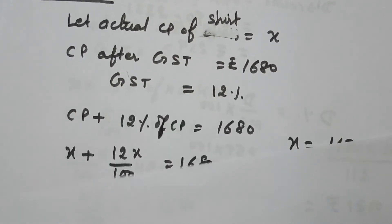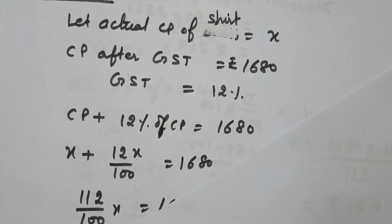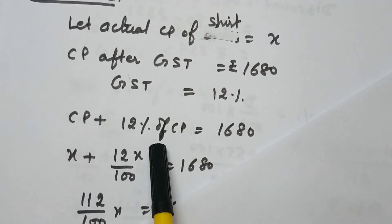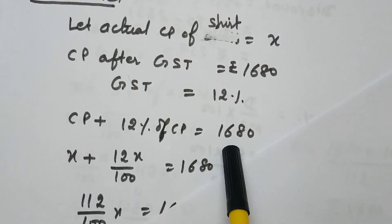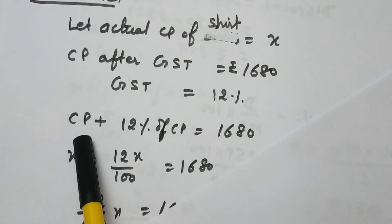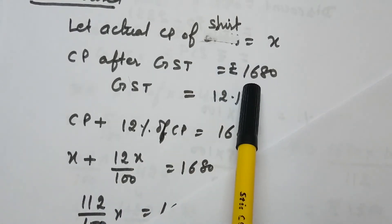So now you can see that cost price plus 12% of cost price equals Rs. 1680, because 1680 is the cost price after GST.